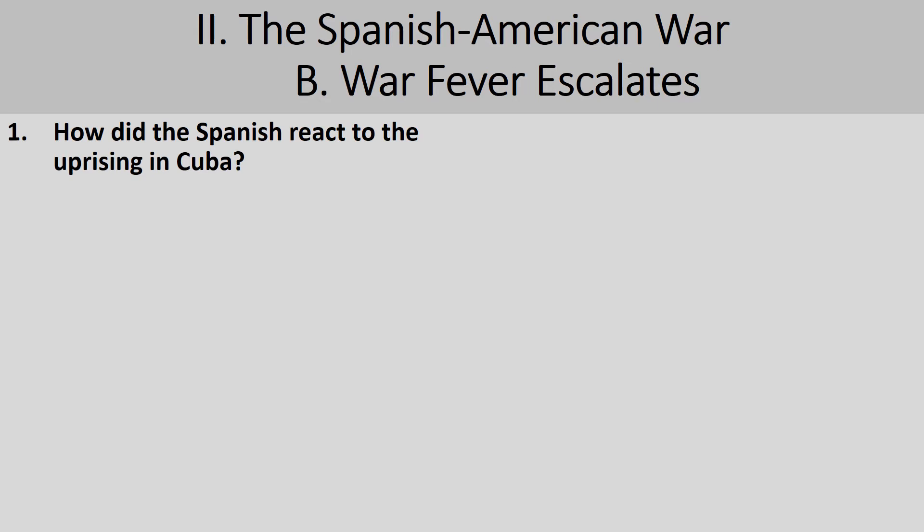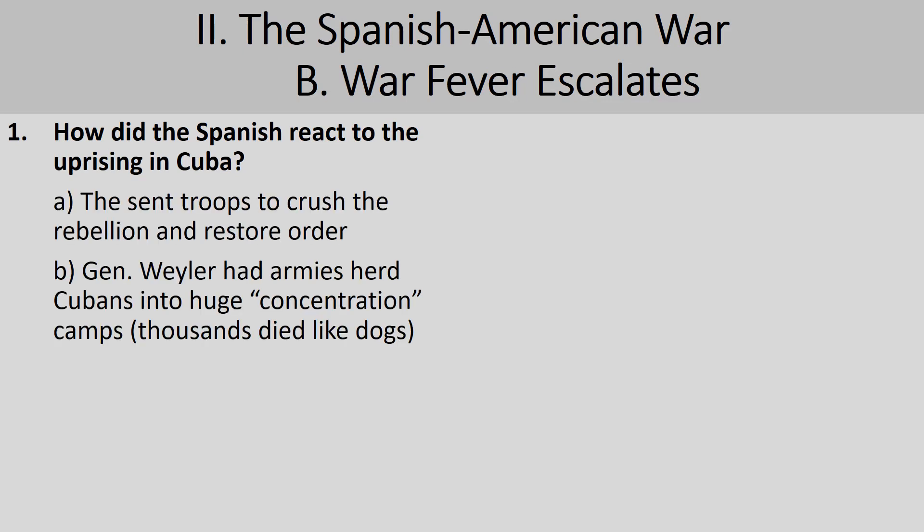As issues with those Cuban rebels and the Spanish army began to intensify, war fever in America literally started to escalate. In 1896, Spain responded by not only sending troops, but also sending a famed general, General Weiler, to Cuba to restore order.